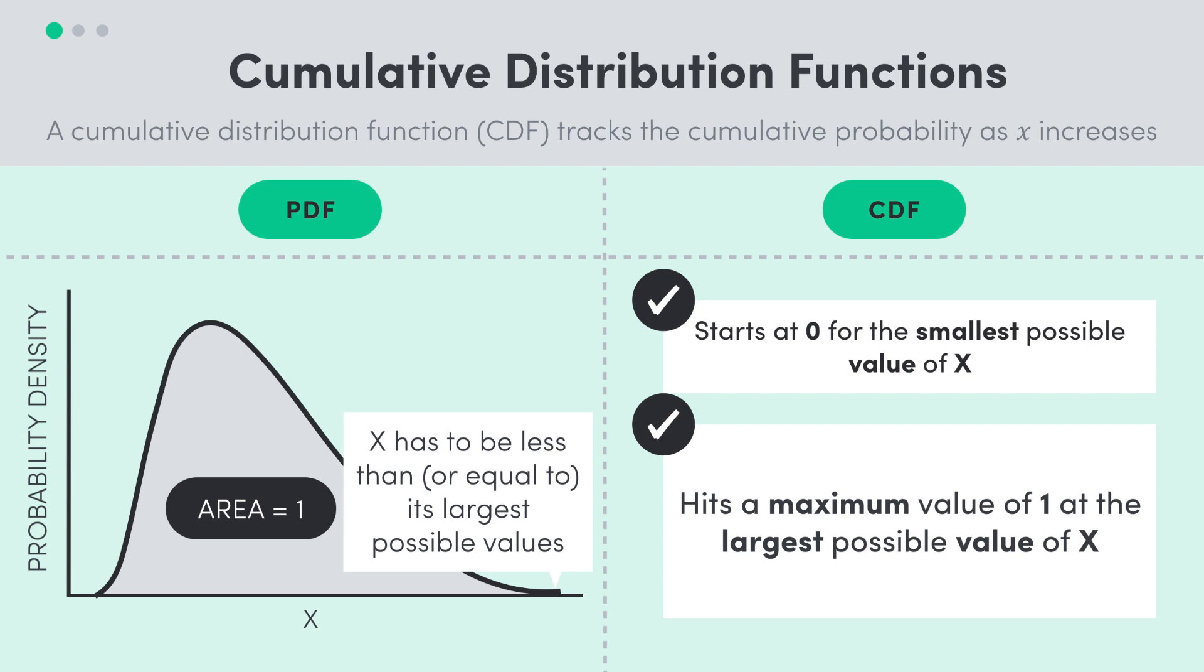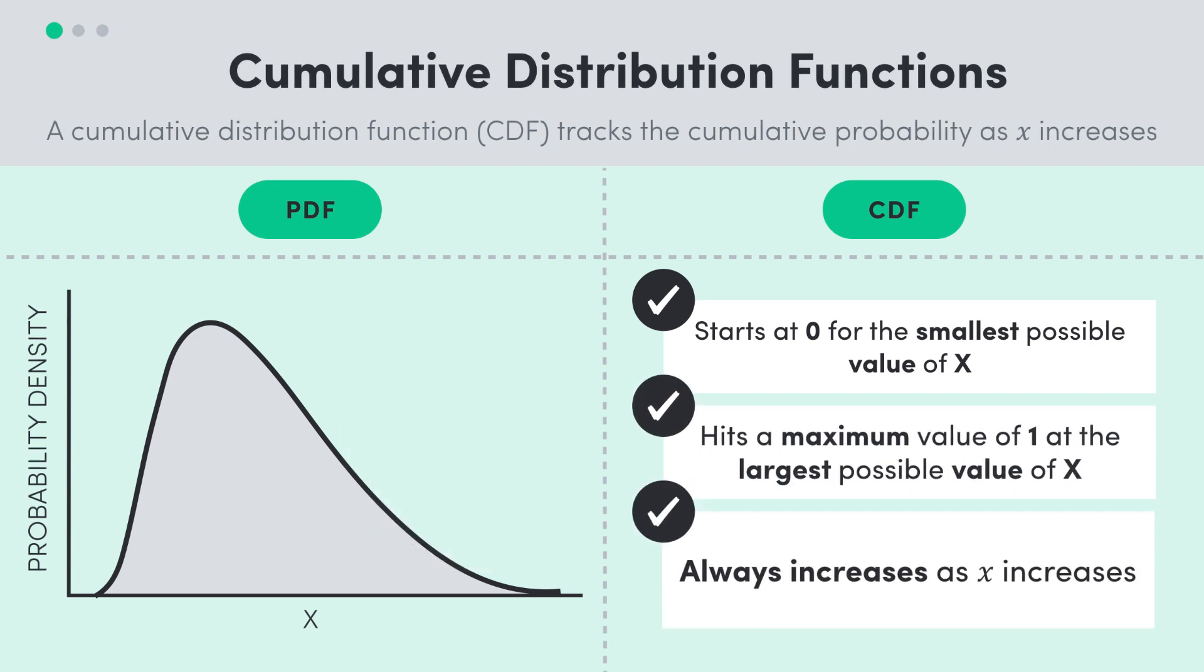Additionally, the CDF is always increasing, as we increase the value of little x that big X has to be less than. This is because the PDF is always positive, so as we move this x line across, we're always going to be increasing the area under the curve, without taking any away.